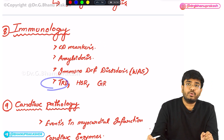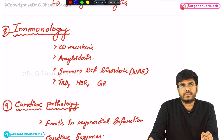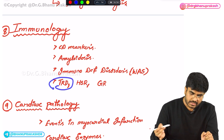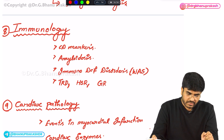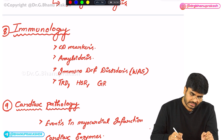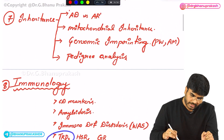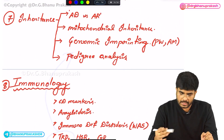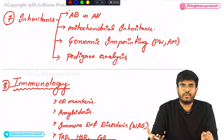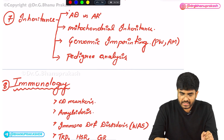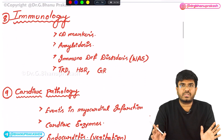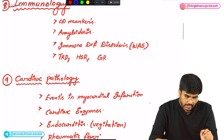Trinucleotide repeat diseases, which actually belong in the genetics section, are also very important. Trinucleotide repeat diseases like Huntington's disease — you have to know about these.